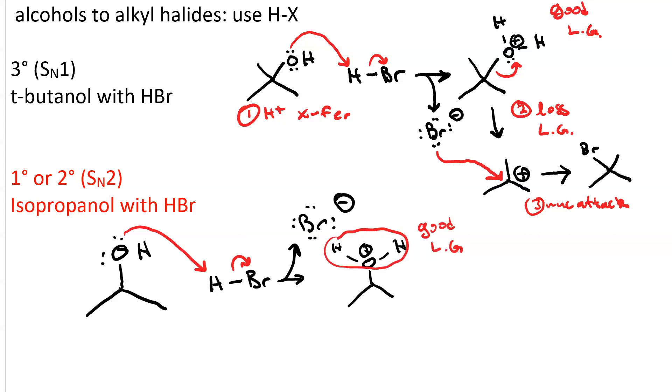This first step is proton transfer. And then our second step is SN2 substitution. So our bromide ion attacks the alpha carbon and the water leaves. So our product is the isopropyl bromide. And step two of our mechanism included both nucleophilic attack and loss of a leaving group, a concerted process because it's SN2.